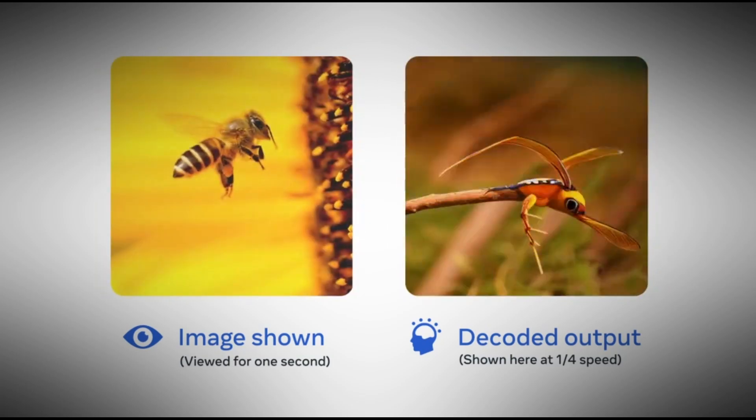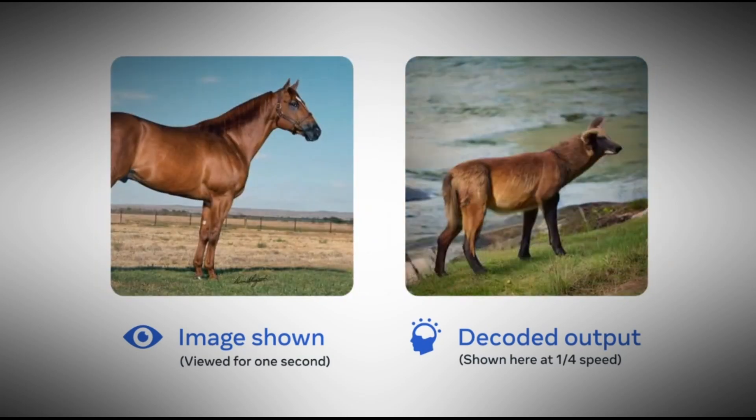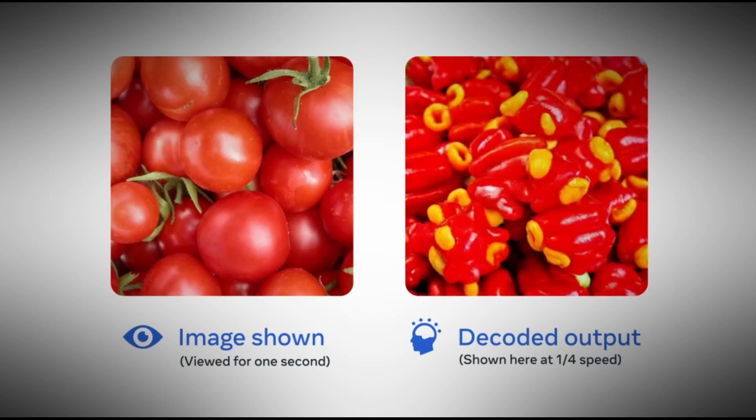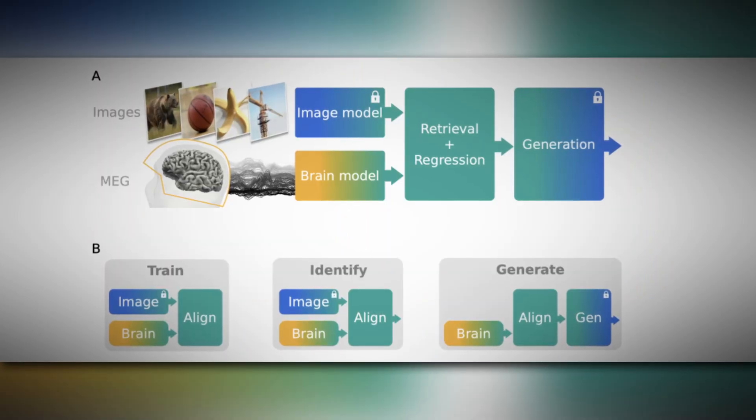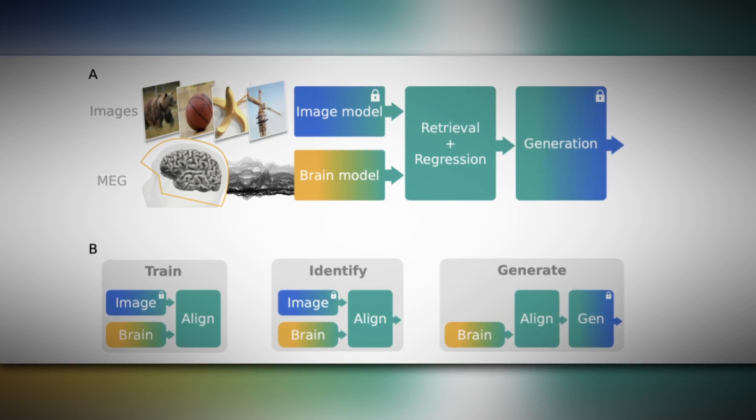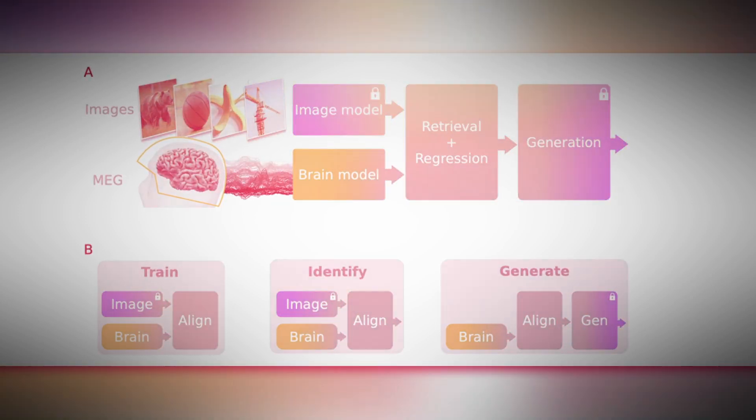This system can operate in real-time, reconstructing images perceived and processed by the brain at any given moment, based on ongoing brain activity. At its core, the system consists of three components: an image encoder, a brain encoder, and an image decoder.